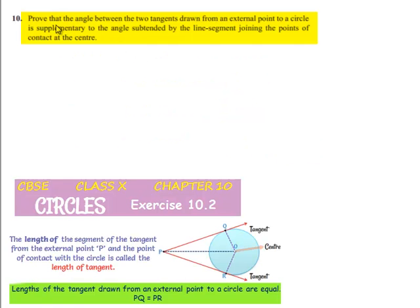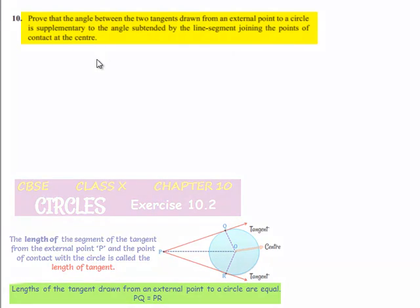Moving on to the 10th question: prove that the angle between the two tangents drawn from an external point to a circle is supplementary to the angle subtended by the line segment joining the points of contact at the center.